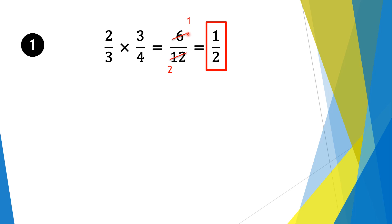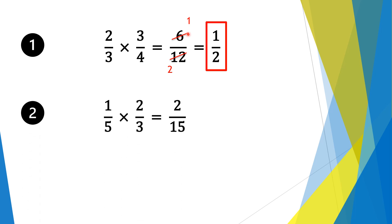Moving on to question 2. We have 1/5 times 2/3. So 1 times 2 is 2, and 5 times 3 is 15. So our solution is 2 over 15.